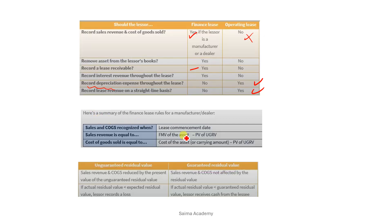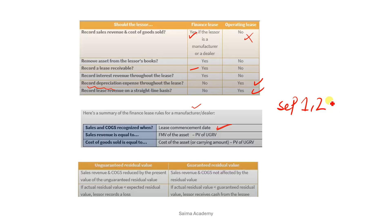Here is a summary of the Finance Lease rules for a manufacturer/dealer Lessor. If you are a Lessor who is a manufacturer or dealer making a sale, the rules are: sales revenue and cost of goods sold are both recognized on the lease commencement date. The commencement date is when the lease actually starts. For example, if you sign the paperwork on September 1st, 2024, that is the agreement date, not the commencement date.